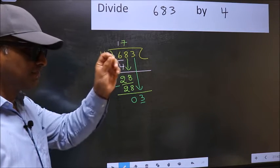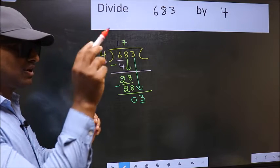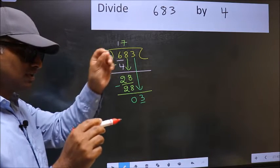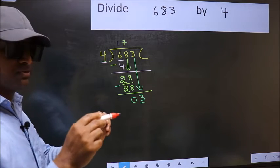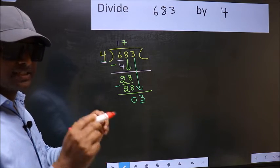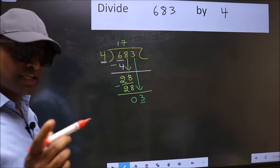I repeat: bringing the number down and also putting a dot and taking 0—both at the same step—you are not supposed to do. Instead,